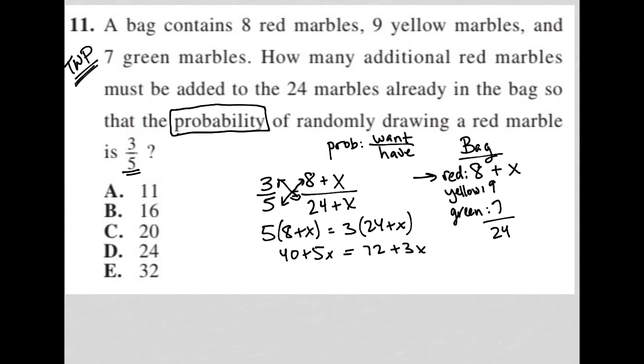I can then combine like terms. I'm going to subtract 3X from both sides and subtract 40 from both sides so that my 40s cross out here. And I have 5X minus 3X is 2X, and I have that's equal to 32.